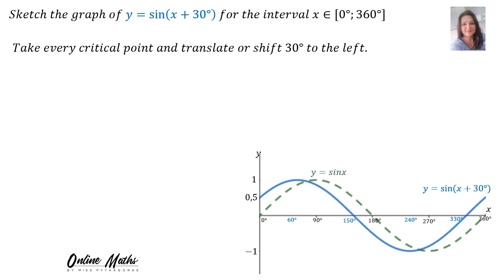You can look at the graph there. The green one is the original sin graph, Y = sin X, and then the blue graph is the graph Y = sin(X + 30). You can see that the graph shifted to the left. Now let me show you how I got to that.